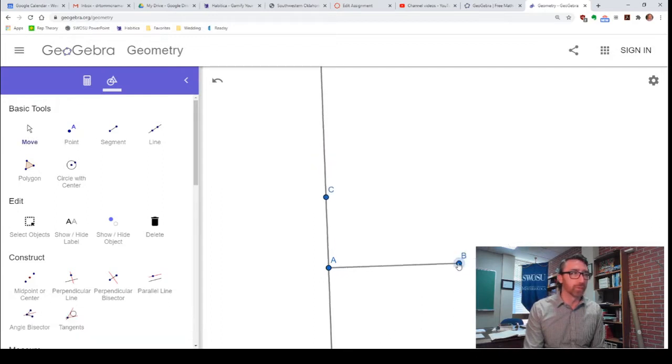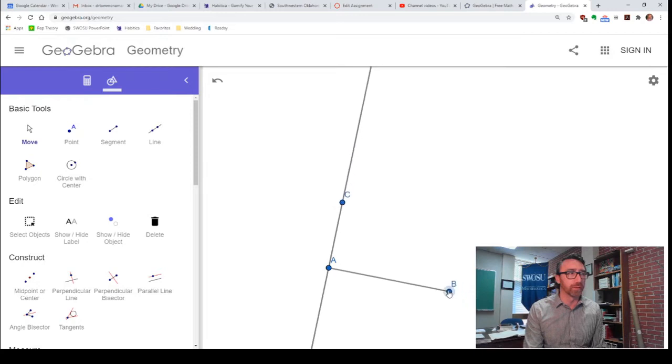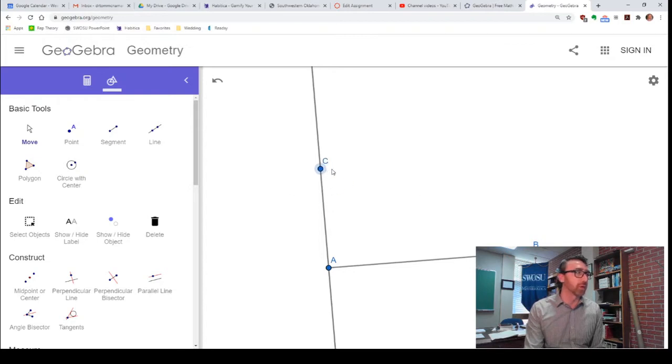And then we'll put another point on that perpendicular line. So, if we go to the move tool, we can see, no matter what we do to this segment, our line stays perpendicular to it. We can move C along that line, but we can't pull C off the line.